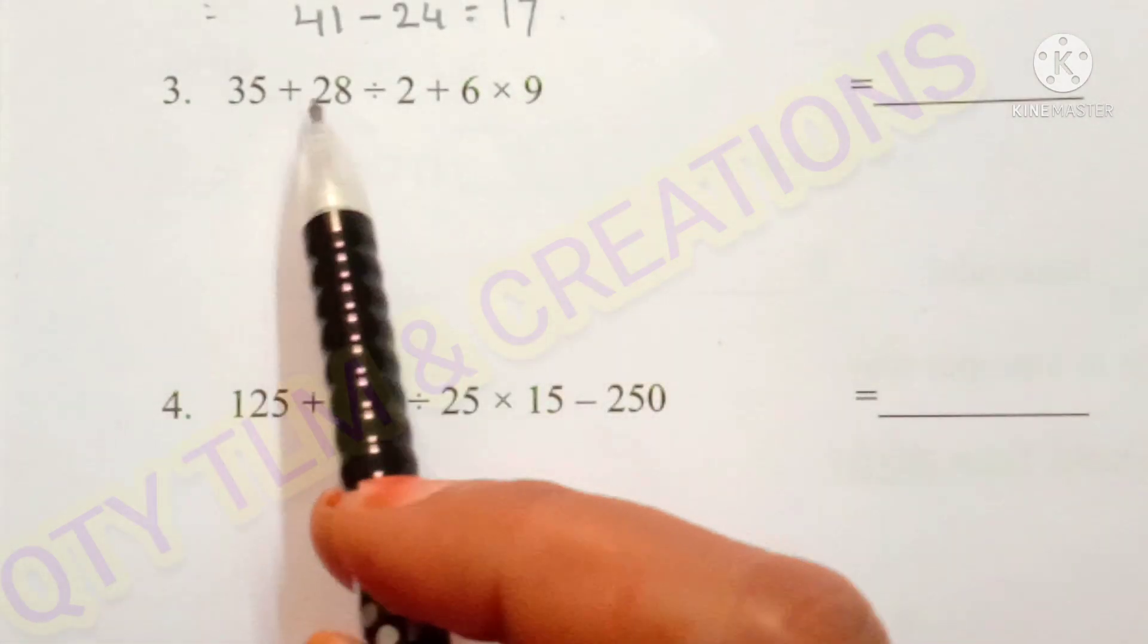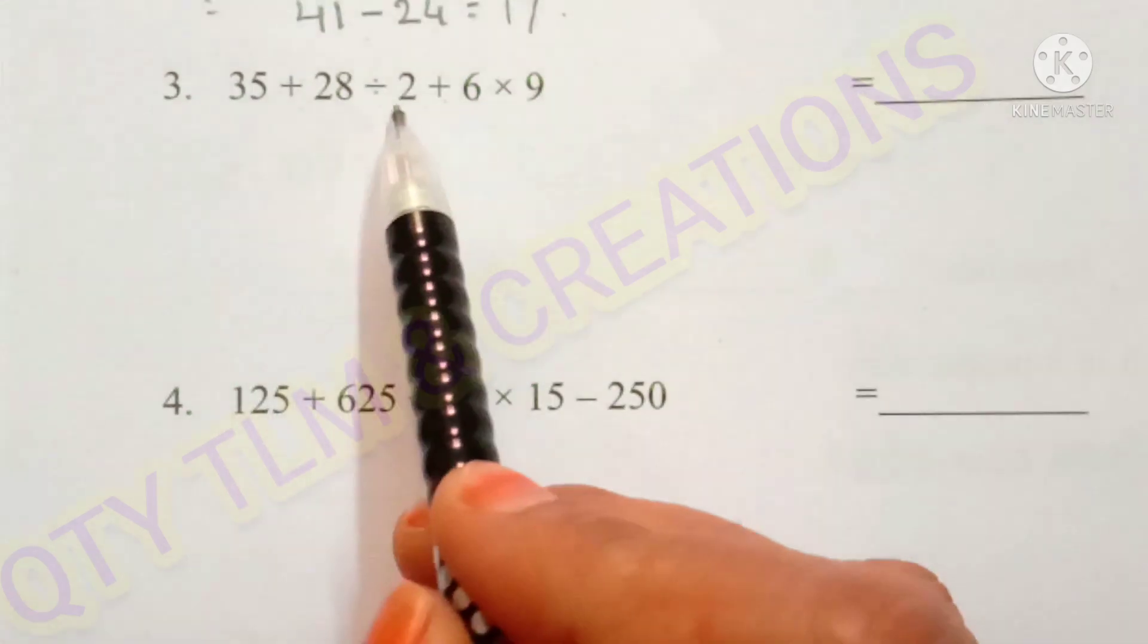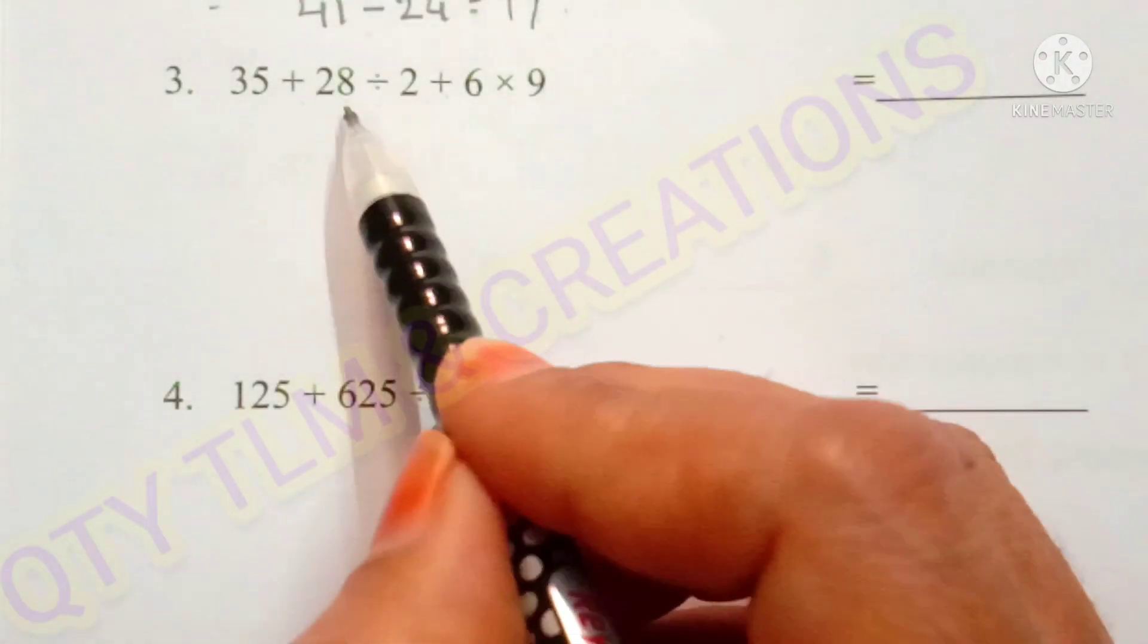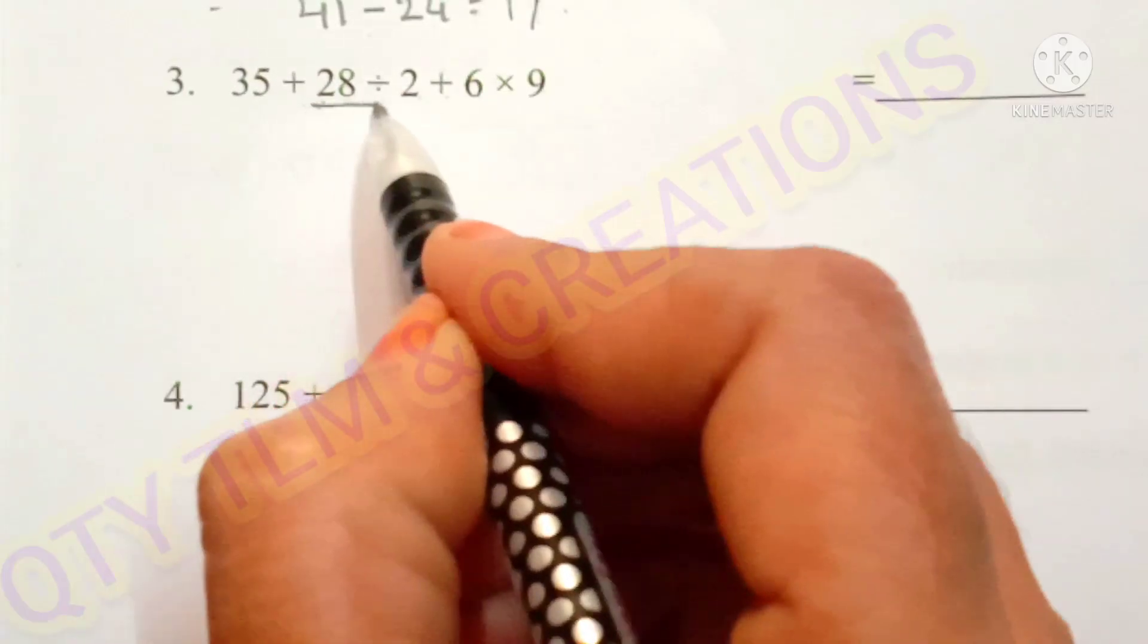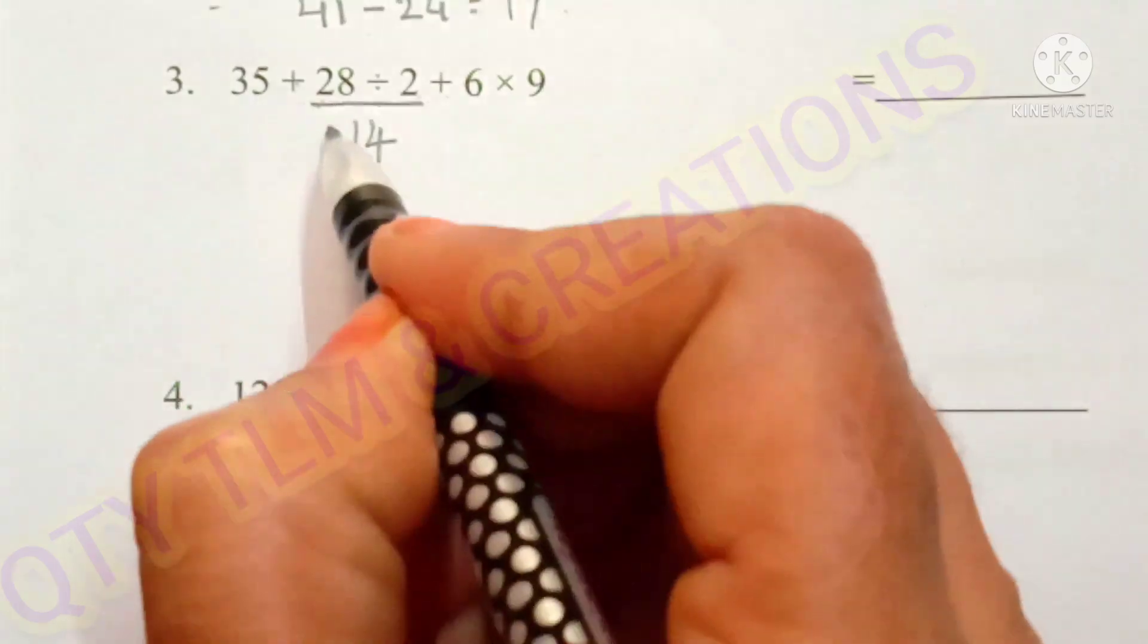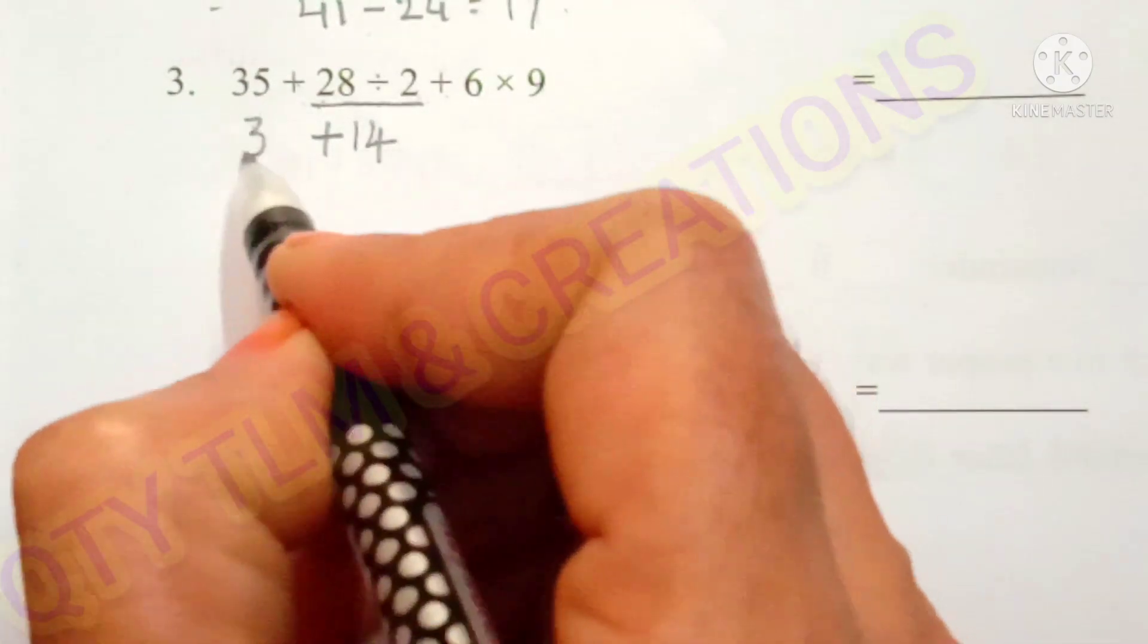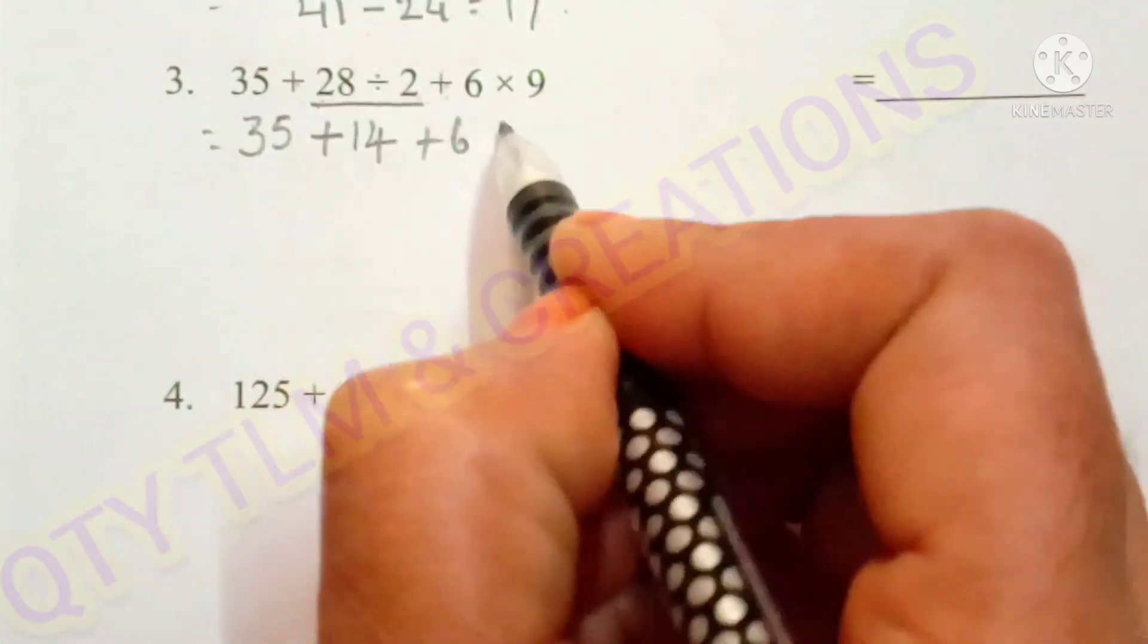Next question: 35 plus 28 divided by 2 plus 6 into 9. In this sum there are 3 operations only. So we perform the division first. 28 divided by 2. So 2 divides 28 for 14 times.